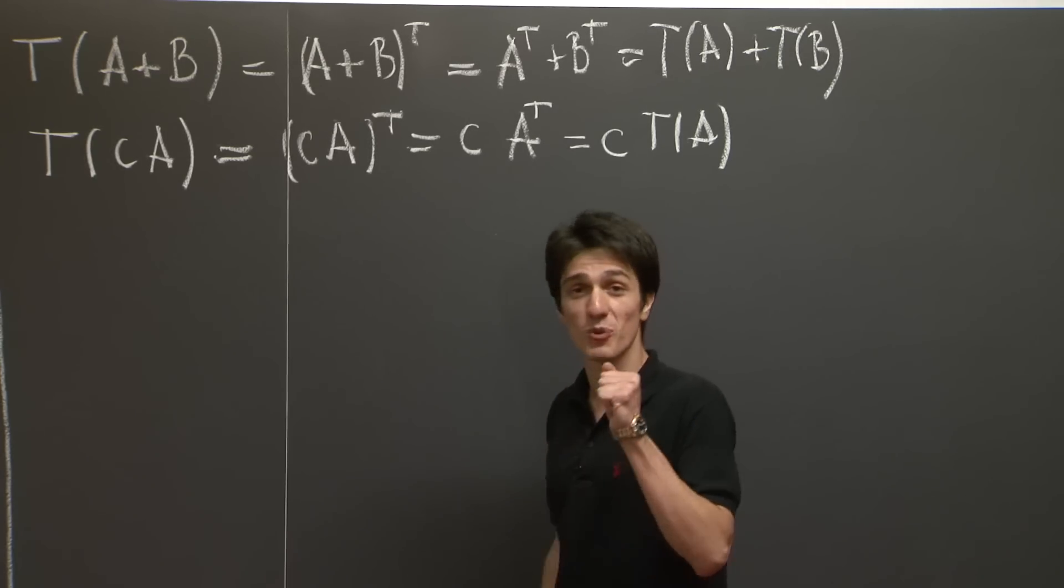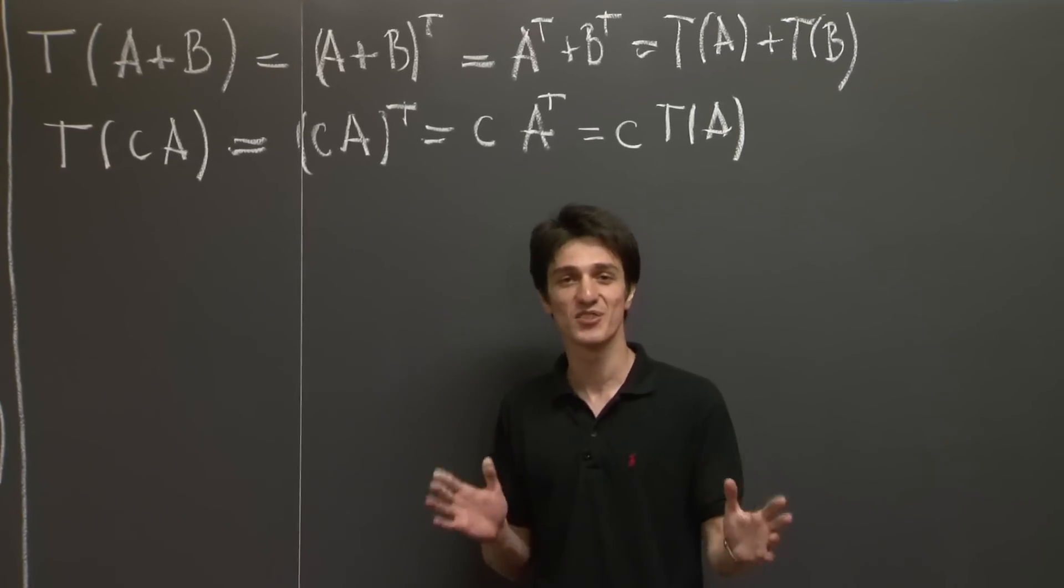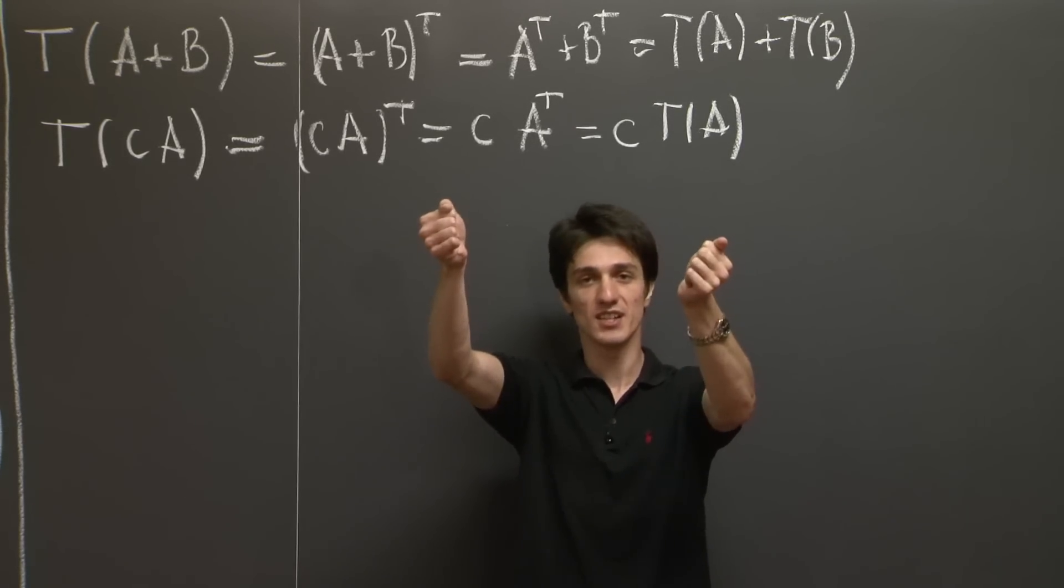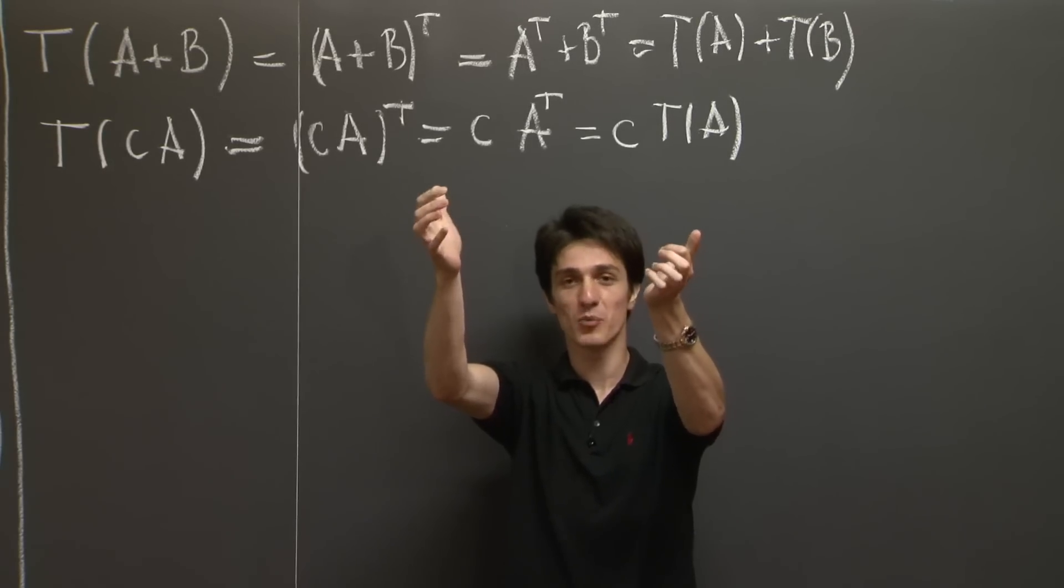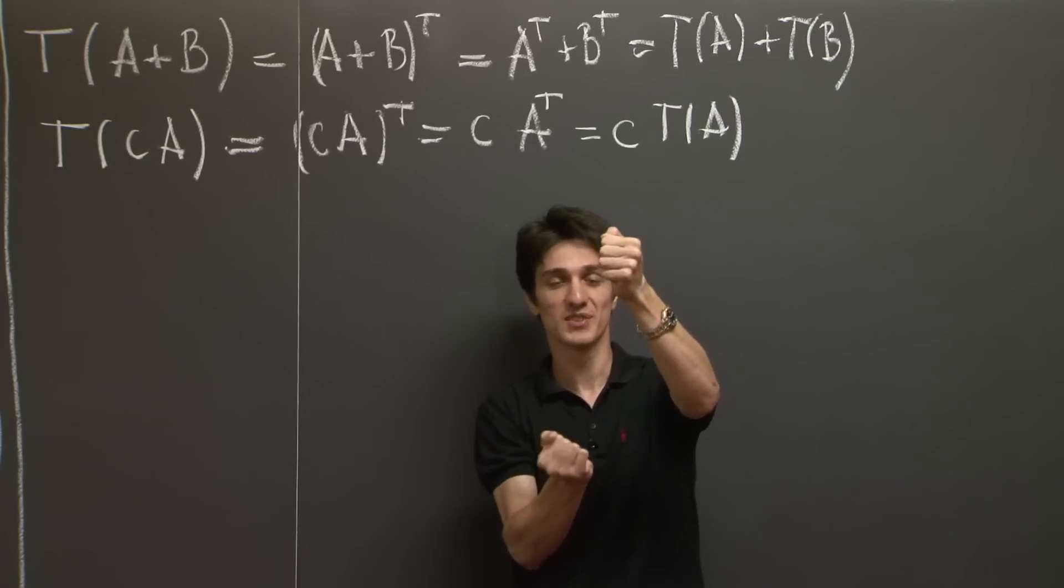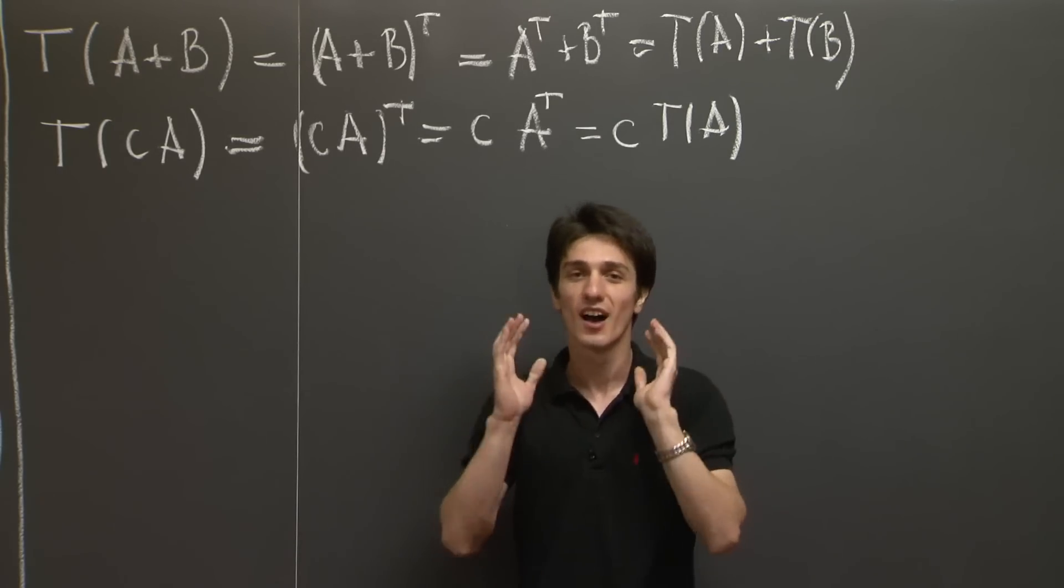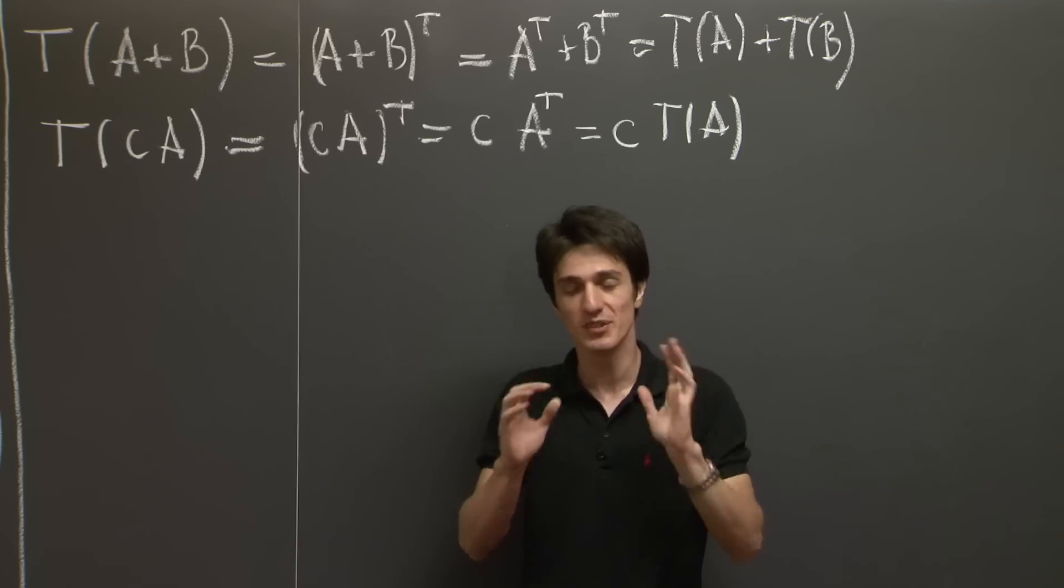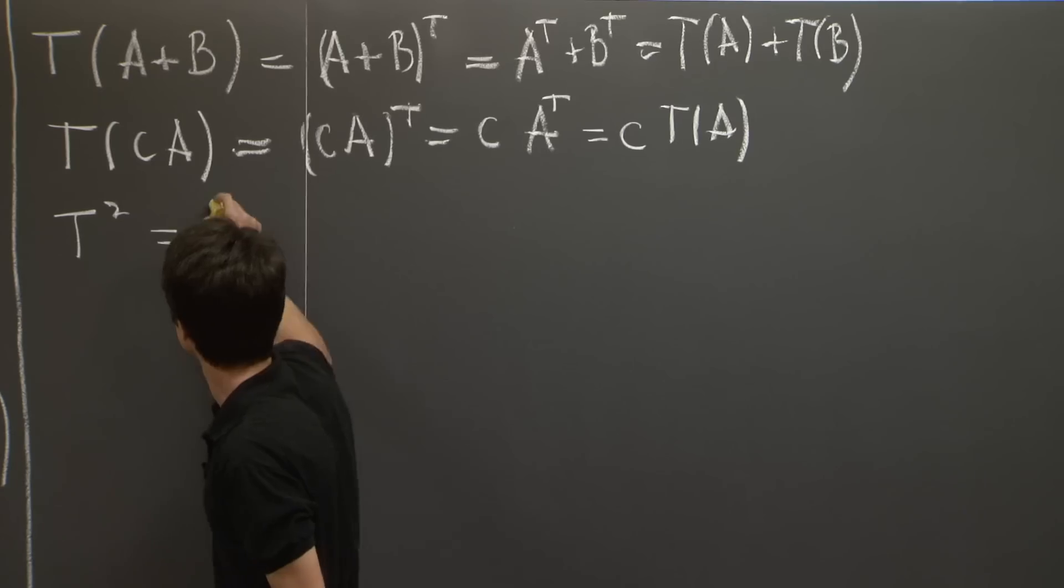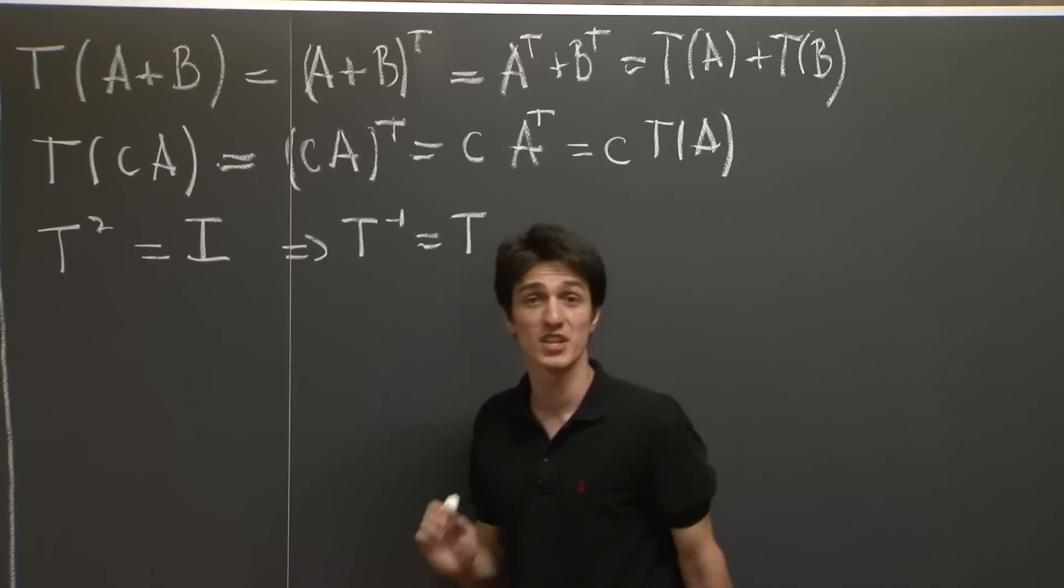Now, can we figure out what its inverse is? What does the transpose do? It takes a column and flips it into a row. So what happens if we apply the operation once again? It's going to take the row and turn it back down to the column. So applying the transformation twice, we come back to the original situation. Therefore, T squared is the identity. And from this, we infer that the inverse is the transformation itself.